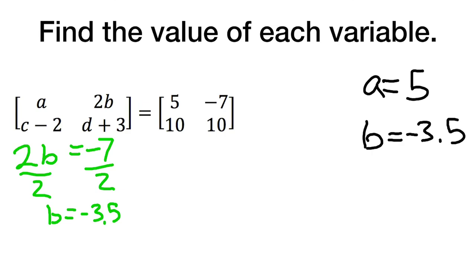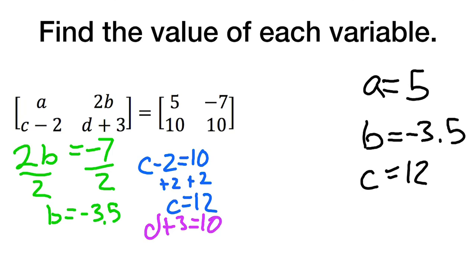Now I'm going to solve for C. Now we know that C minus 2 equals 10, so I would add 2. C equals 12. And finally I'm going to solve for D. D plus 3 equals 10, subtracting 3. D equals 7.